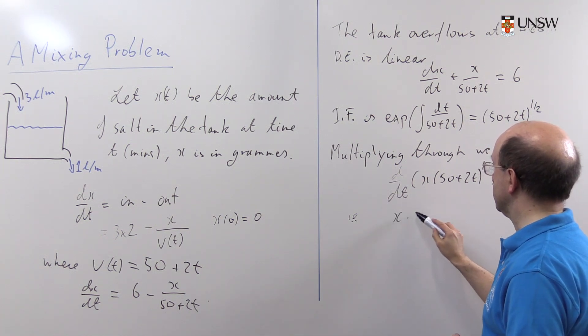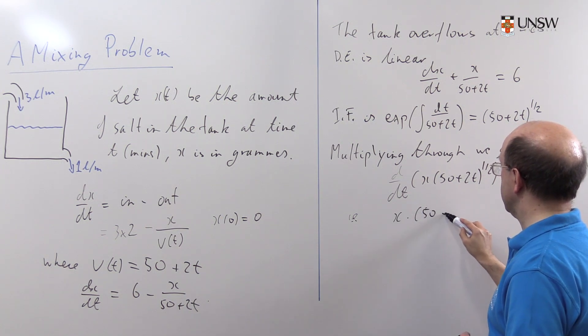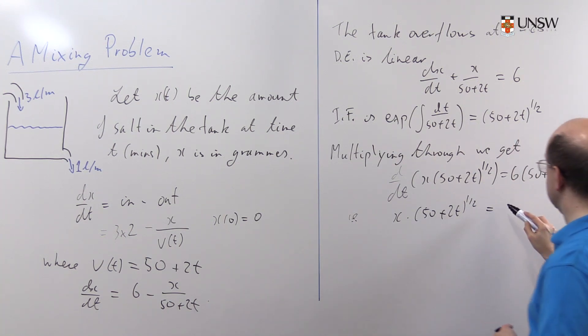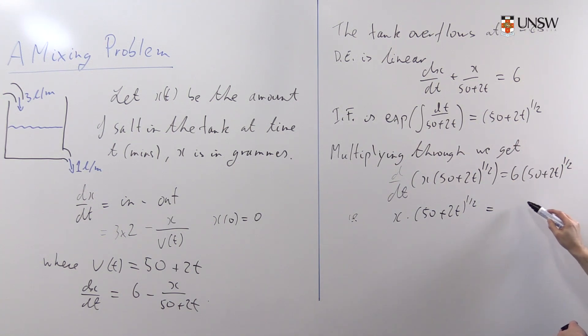So we get x times (50 plus 2t) to the 1/2 equals... well, that will be (50 plus 2t) to the 3/2. And when we sort the arbitrary constants out, I'm going to find that we'll leave a 2 here, plus of course an arbitrary constant. We need a multiplying constant. We get a C on this side. So that's our differential equation solved.